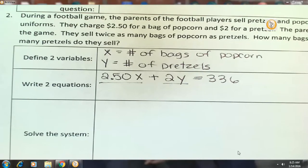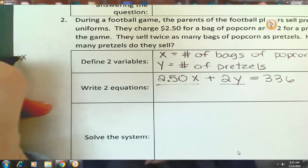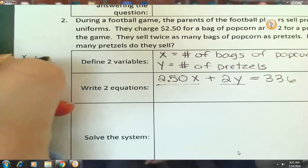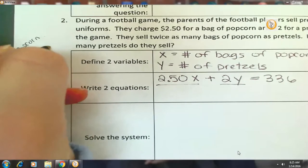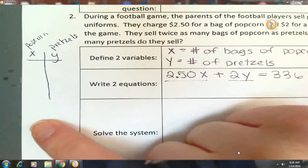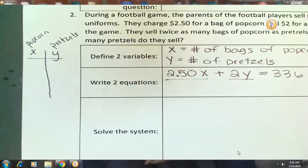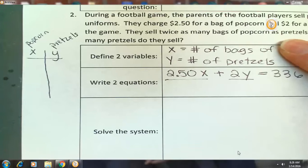What else do we know? Twice as many bags of popcorn as pretzels. Let's move off to the side for a second. I want you to think about this before we're making our new equation. What I've done is made a table. Popcorn and pretzels. This is talking about the number of bags of popcorn and the number of pretzels. So they sold twice as many bags of popcorn as pretzels.